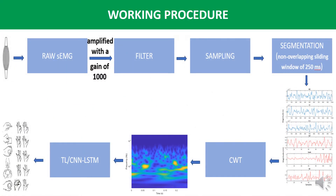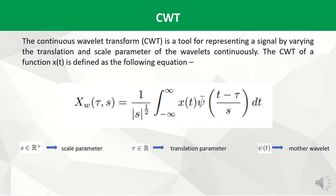In this slide I am going to show our proposed method with a flowchart. First, raw EMG signals are taken from two open-source EMG datasets. Then these signals were amplified and filtered, and sampled. A non-overlapping sliding window of 256 milliseconds was used to segment the signal. Each window goes through CWT to make a 2D image of the signal. Finally, weights of different neural networks are transferred and modified CNN-RNN architectures are used to classify those images for different hand gestures.